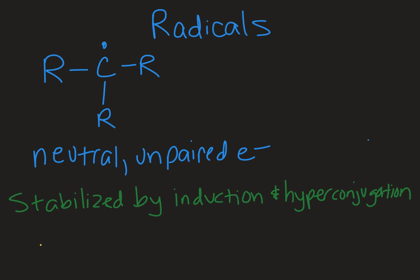In terms of relative stability, the most stable radical will be a resonance stabilized radical where that reactive intermediate can be shared across multiple atoms. In the same vein as carbocations, the more substituted the radical is the more stable it's going to be.